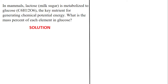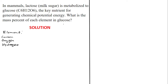The last question: in mammals, lactose, which is milk sugar, is metabolized to glucose — the key nutrient for generating chemical potential energy. What is the mass percentage of each element in glucose? The elements involved in glucose are carbon, oxygen, and hydrogen.